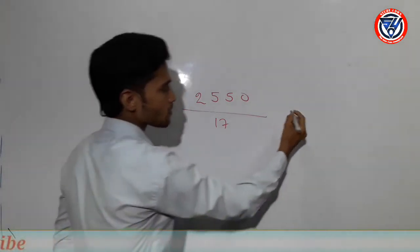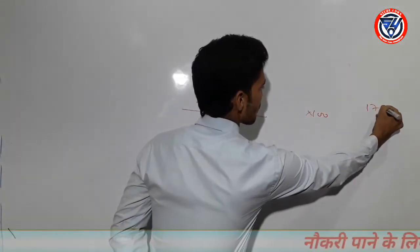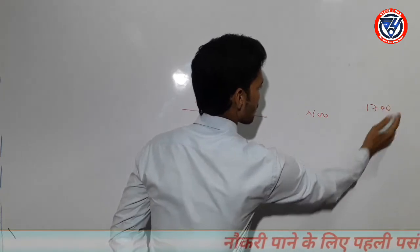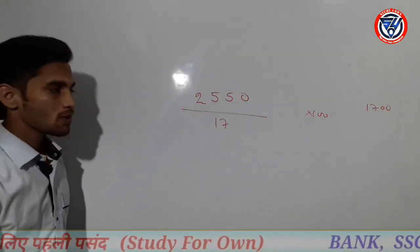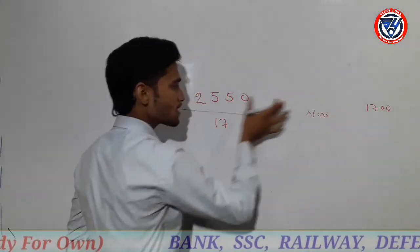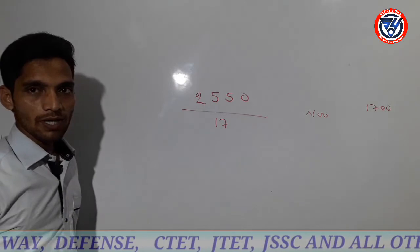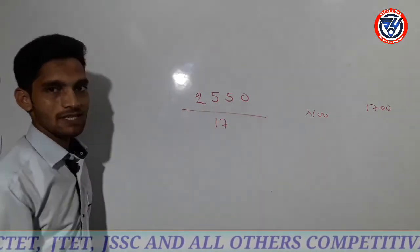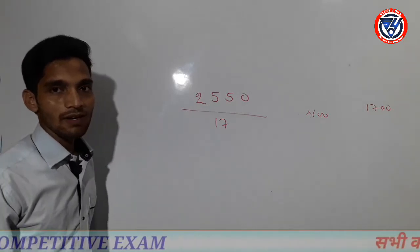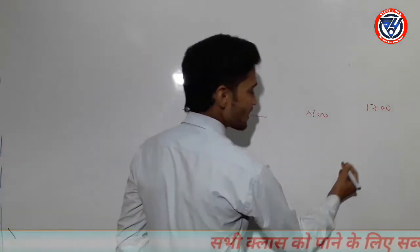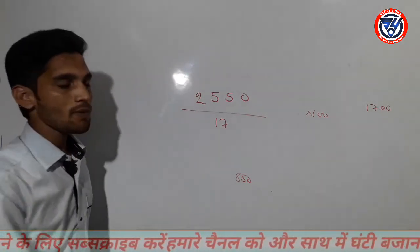So if we divide by 17, how much do we do? 17 into 100 is 1,700. We have 2,500. From 2,500 we take 1,700. That gives us 800 remaining. Then 17 into 100 more is another 1,700 — but that exceeds. So we take 17 into 50 which is 850. So 1,700 taken once gives quotient 100, and we work from there step by step.